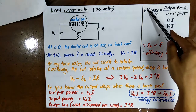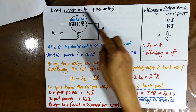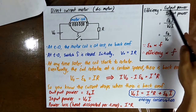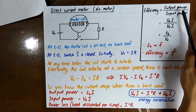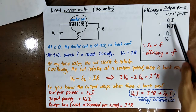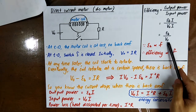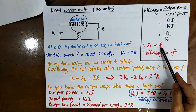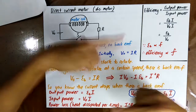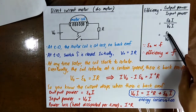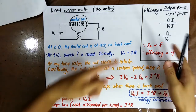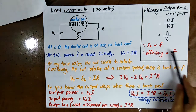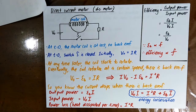For the efficiency of a DC motor, efficiency equals output power divided by input power, which is EB divided by V₀. When the coil rotates faster and faster, the back EMF gets larger, so the efficiency of the DC motor gets larger.